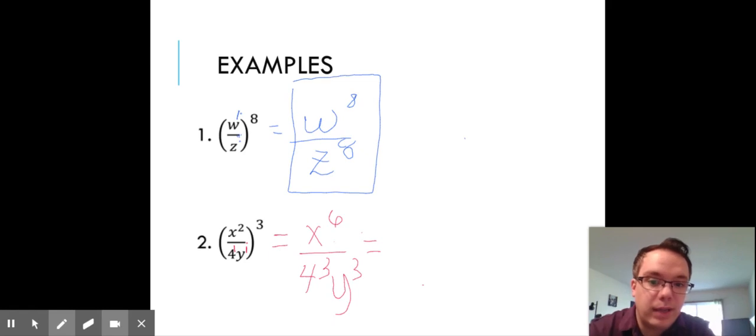Remember, if we have any numbers as bases, like 4, we have to simplify them. So x^6 is going to stay the same in our numerator. But we have to take 4^3. And so 4 times 4 times 4 is 64.